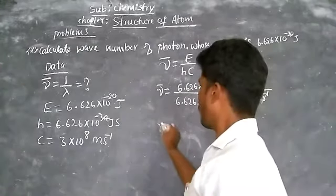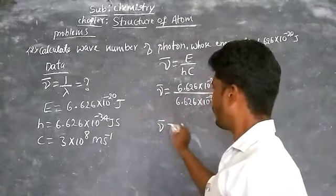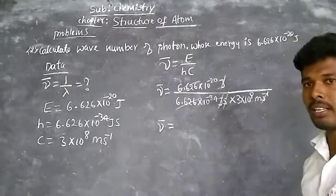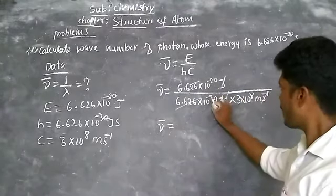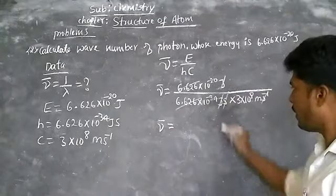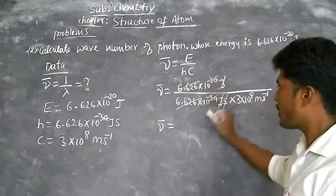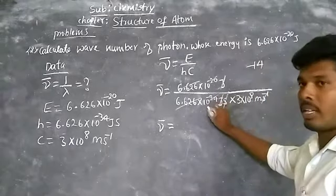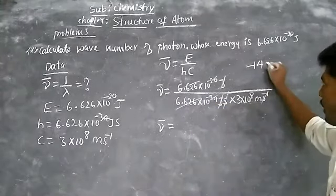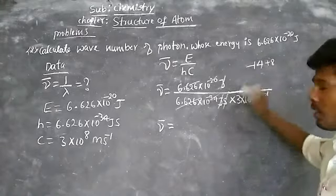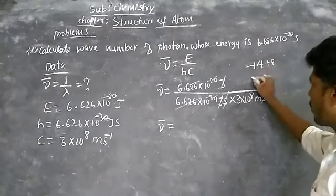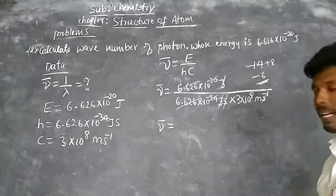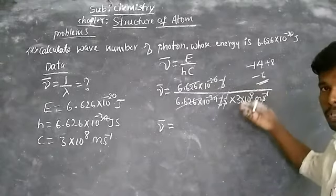Per meter — the meter goes to the numerator, becoming per meter. Now: 6.626 and 6.626 cancel. Then 10⁻²⁰ divided by 10⁻³⁴ gives 10⁻²⁰⁺³⁴ equals 10¹⁴, minus the 10⁸ gives 10¹⁴⁻⁸ equals 10⁶ wait — minus 34 and minus 20 gives minus 14, then divided by 10⁸ gives 10⁻⁶ in denominator.